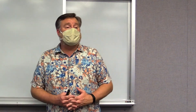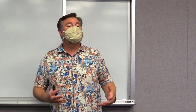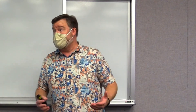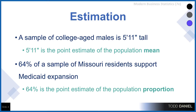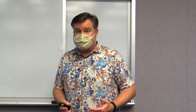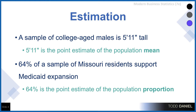What we're going to do is build upon that. For example, when we take a sample we might say that a sample of college-age males is 5 foot 11 inches tall, therefore 5 foot 11 is our best point estimate for the population mean. Or we can do this with a proportion: 64% of a sample of Missouri residents support Medicaid expansion, so 64% is our best point estimate of the population proportion.